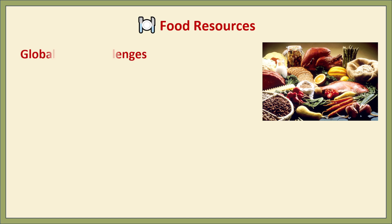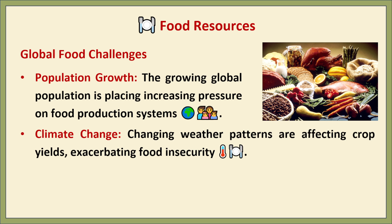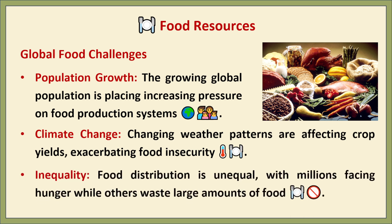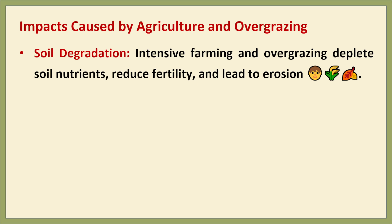Food resources and global food challenges. As the global population increases, the demand for food also rises, straining our agricultural systems. Climate change — including irregular rainfall, drought and extreme temperatures — affects crop production and food availability. Inequality is also a major problem: while some people waste food, others suffer from hunger and malnutrition due to unequal distribution and access to food.